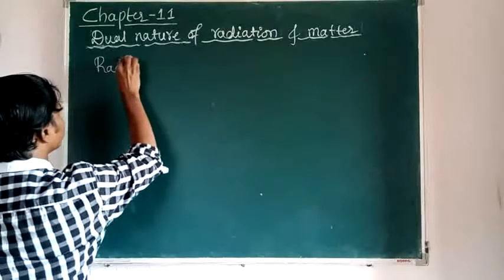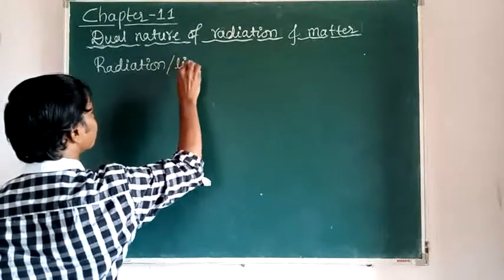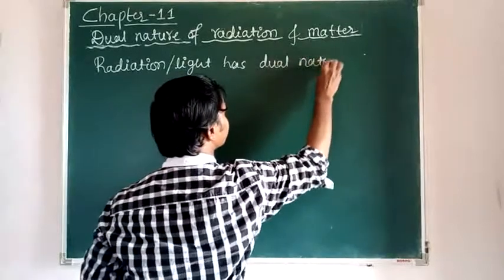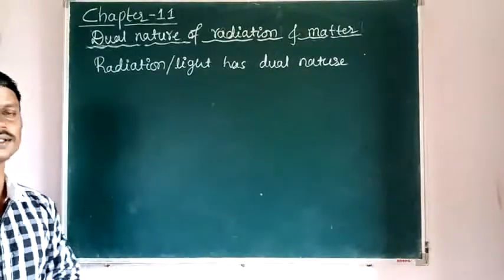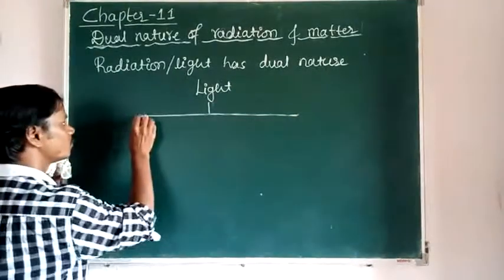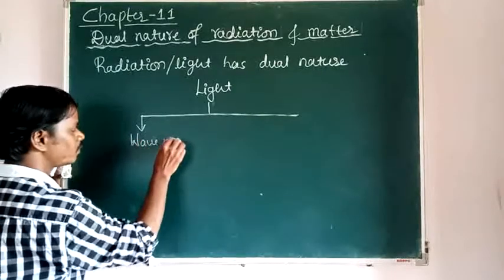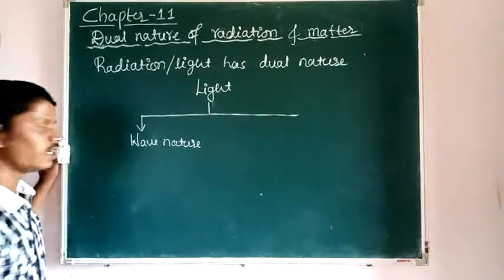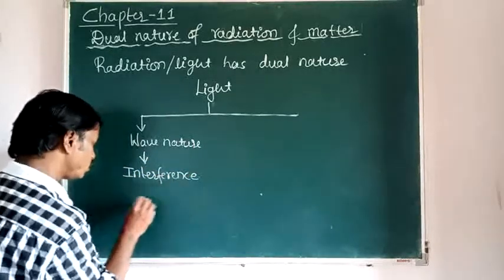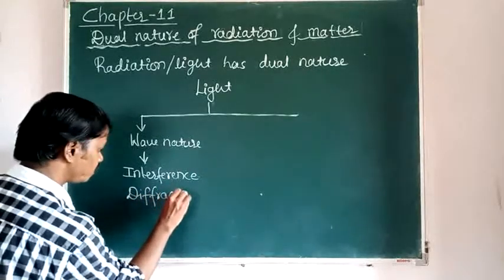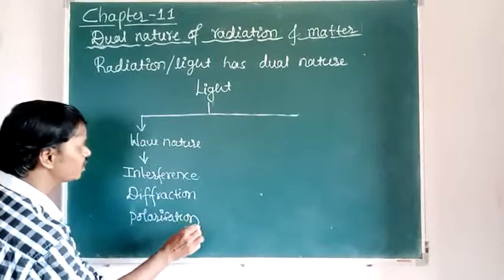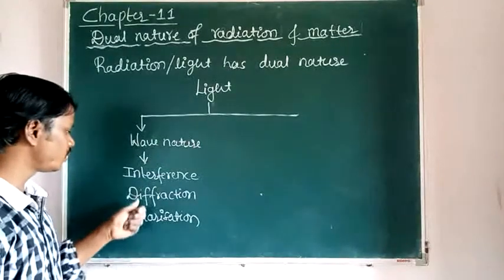Radiation or light has dual nature. What are those natures? Wave nature and particle nature. The wave nature of light can be explained by phenomena like interference, diffraction, and polarization.